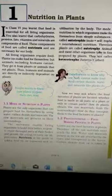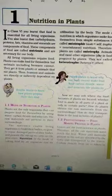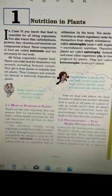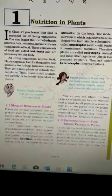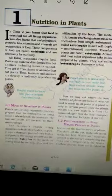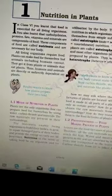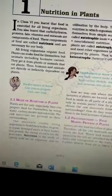Thus, humans and animals are directly or indirectly dependent on plants. Now students, in this chapter we will learn about nutrition in plants. The first point is mode of nutrition in plants. Let us understand that.